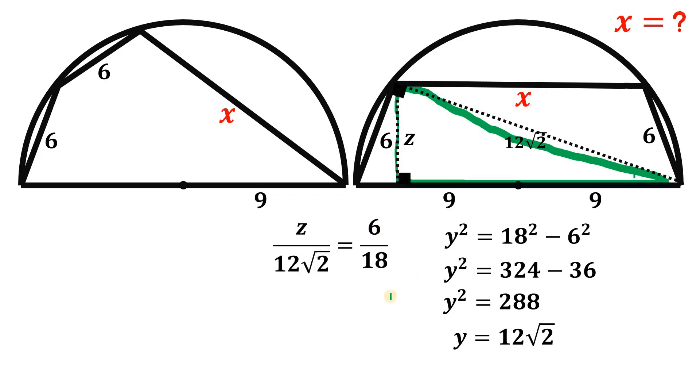And solving for the value of z: 6 over 18 is 1 over 3. Multiply both sides by 12 times square root of 2, we get that z equals 4 times square root of 2. So the length of this z is equivalent to 4 times square root of 2.